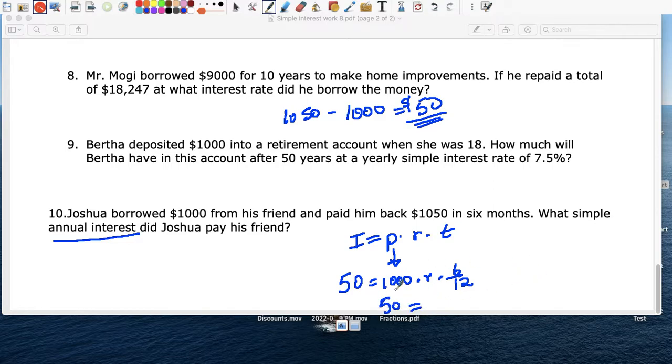$50 equals, let's divide this. It's $500. 1,000 times 6 over 12 is $500. Divide both sides by $500. And R equals 50 divided by $500 equals 0.1, or as a percent, 10%.